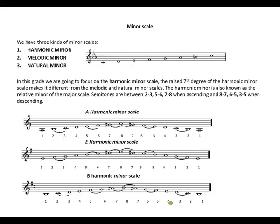Now let's look at minor scales. We have 3 kinds of minor scales: the harmonic minor, melodic minor, and natural minor. In this grade, we are going to focus on the harmonic minor scale. The raised 7th degree of the harmonic minor scale makes it different from the melodic and the natural minor scale. The harmonic minor is also known as the relative minor of the major scale.